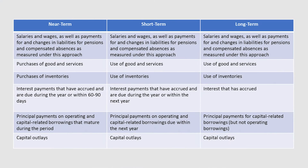All three approaches would report salaries and wages and payments such as compensated absences as outflows, with each approach adjusting the payments for changes in related liabilities as those liability balances are measured under that approach. The near-term approach would report goods and services, including inventory, as outflows as the goods and services are purchased, but the other two approaches would report outflows as the goods and services are used. All three approaches would report outflows for interest, but limited to payments normally expected to be paid in no more than 60 to 90 days after fiscal year end for the near-term approach, and no more than one year for the short-term approach.